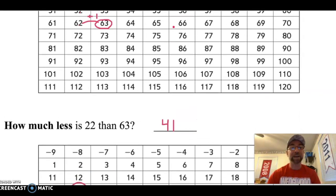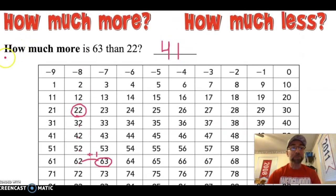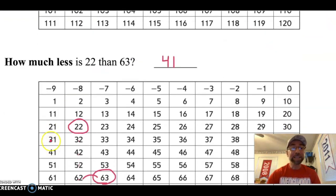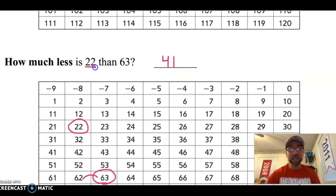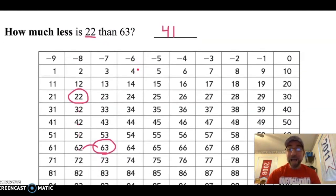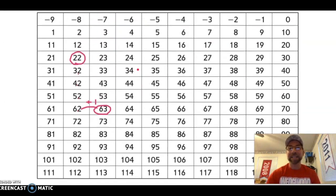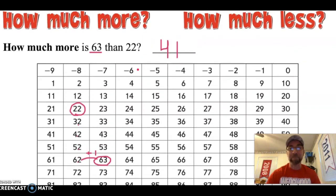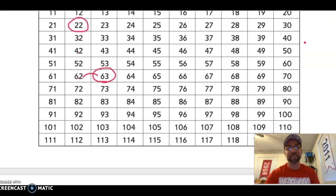You should have noticed something about those two problems. They were the same exact numbers. How much more is 63 than 22? Our bigger number goes first. How much less is 22 than 63? The smaller number went first this time. But I got the same answer both times. Because how much more and how much less both mean the same thing. Find the difference.